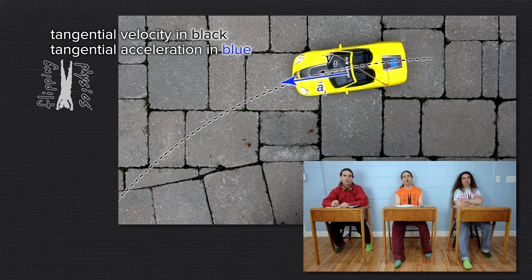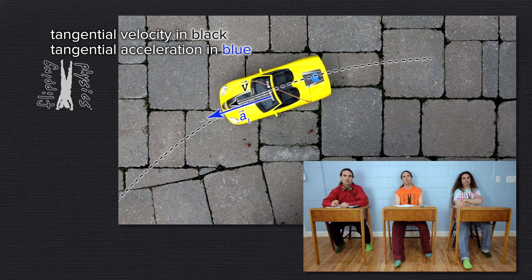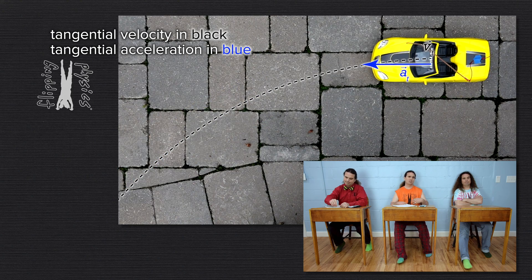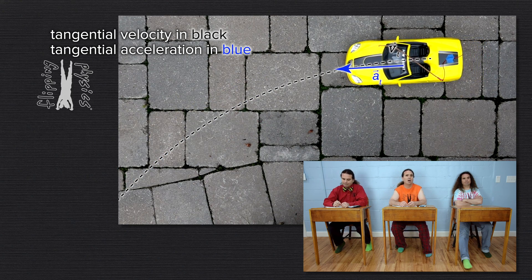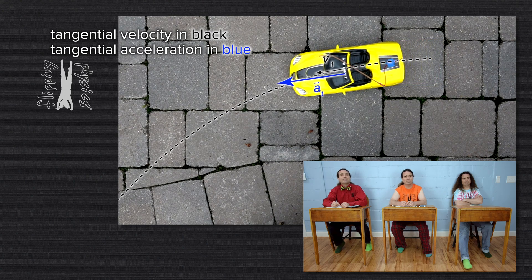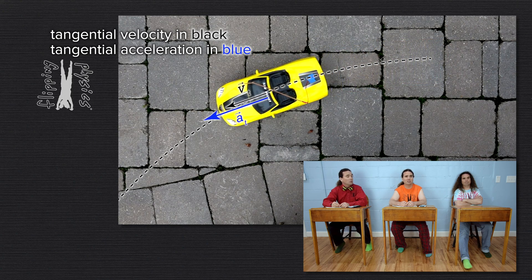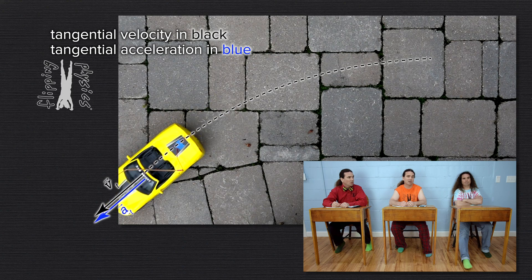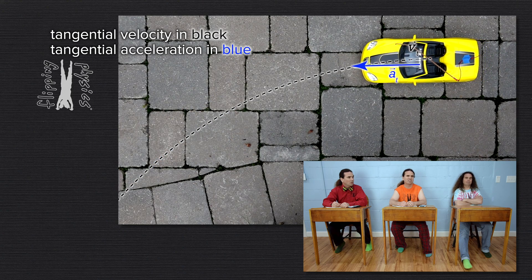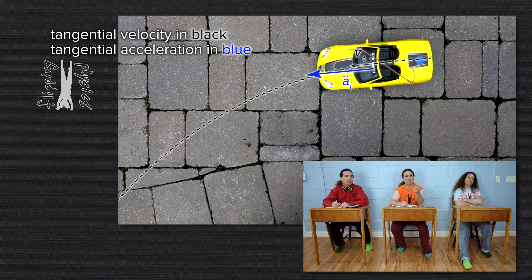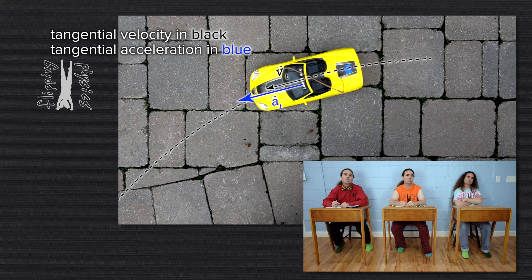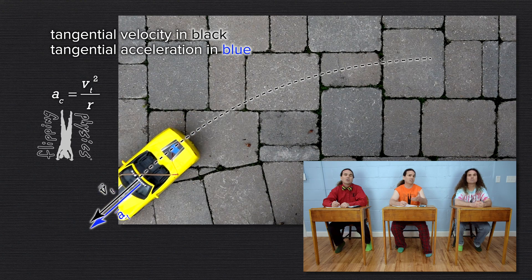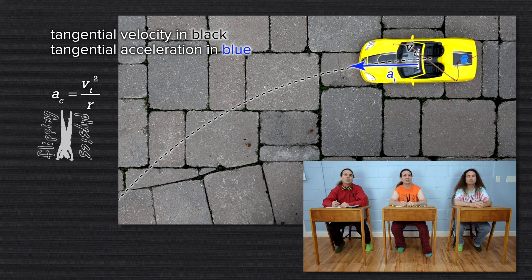Bobby, what about the centripetal acceleration of the car? The center-seeking centripetal acceleration of the car. Well, because the direction of the tangential velocity is changing, there must be a centripetal acceleration which is directed inward. Previously we derived the equation for the magnitude of the centripetal acceleration of an object moving along an arc to equal tangential speed squared over radius.